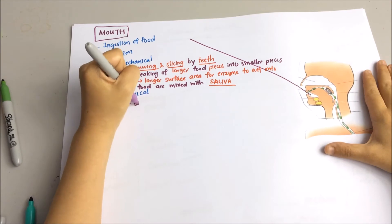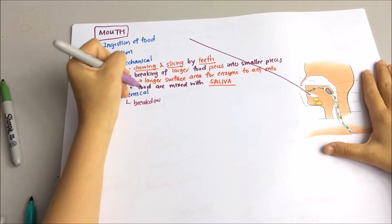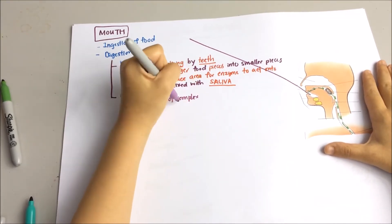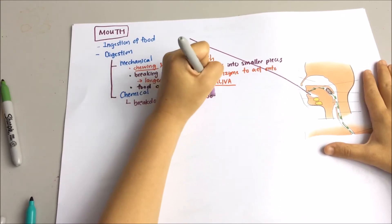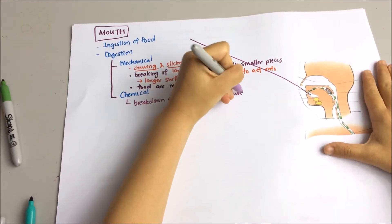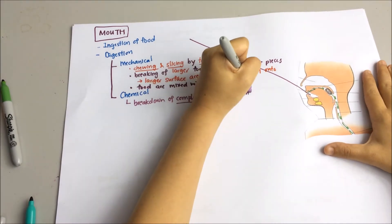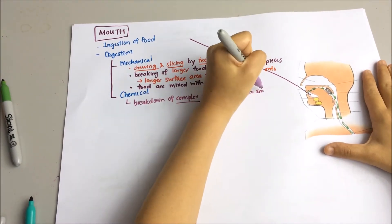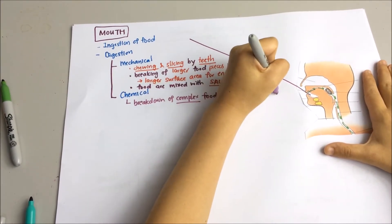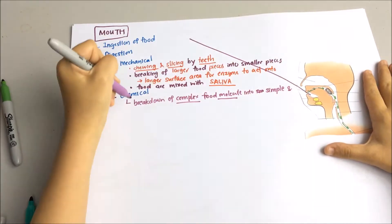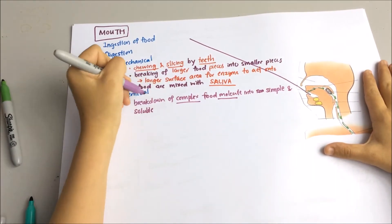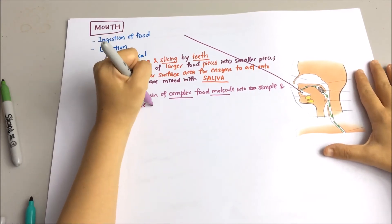So what is chemical digestion? When we say chemical, it means that enzymes are involved. Chemical digestion means breaking down of the complex food molecule into simple and soluble molecules by using enzymes as catalysts.